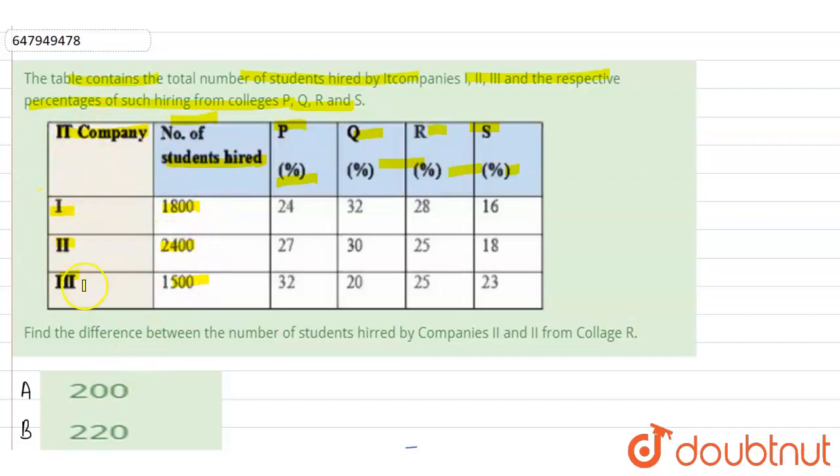There are IT companies 1, 2, and 3, with all their details. We are asking a question: Find the difference between the number of students hired by companies 2 and 3 from college R.